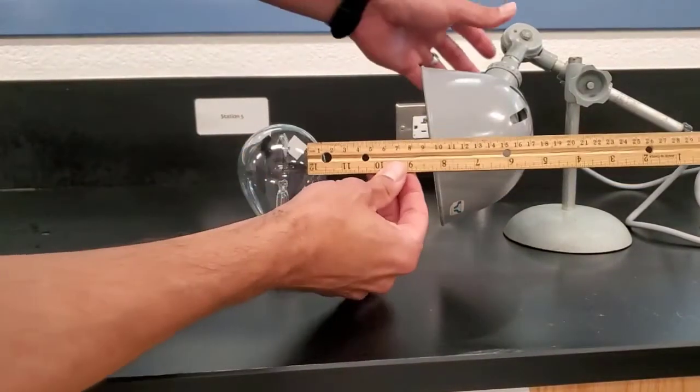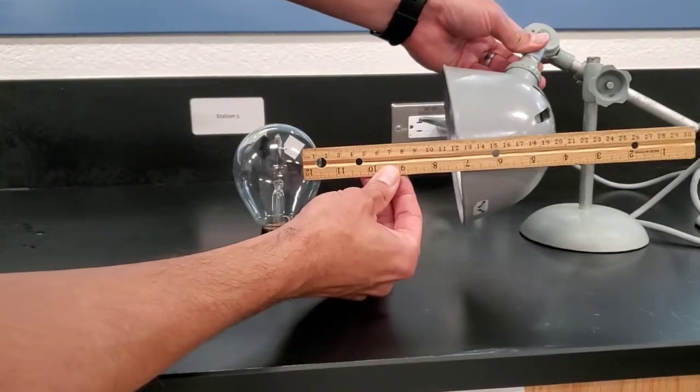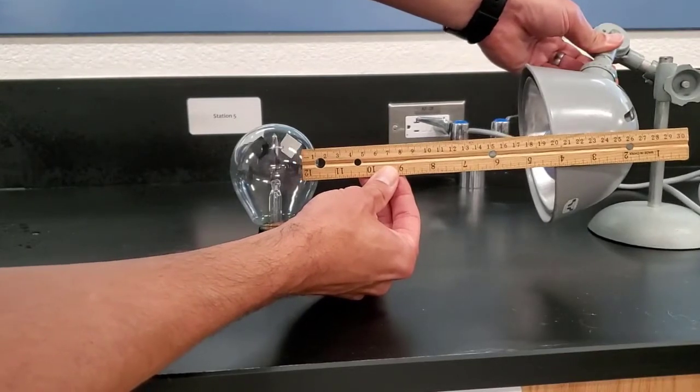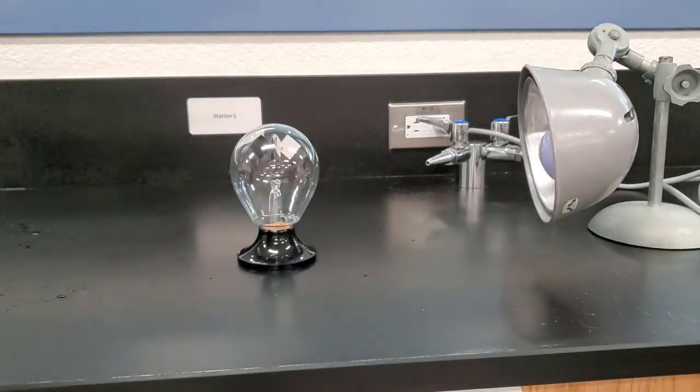Now what I'm going to do is I'm going to adjust it so that the light source is now 20 centimeters away from the radiometer.